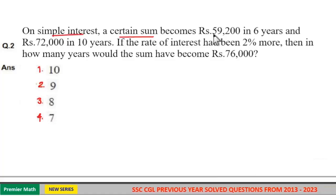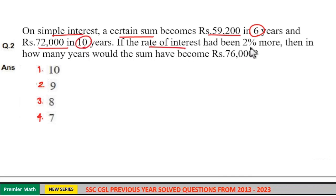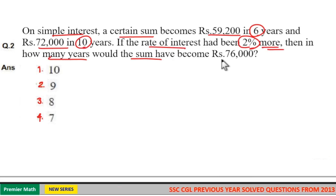On simple interest, a certain sum becomes Rs. 59,200 in 6 years and Rs. 72,000 in 10 years. If the rate of interest had been 2% more, then in how many years would the sum have become Rs. 76,000?